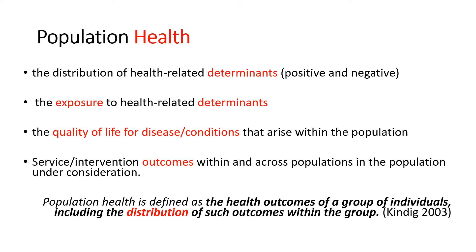We all remember the WHO definition of health, which is a state of complete physical, mental and social wellbeing, and is not merely the absence of disease or infirmity. Population health is used interchangeably with the term 'health of the population' and considers various components of health, including the distribution of health-related determinants both positive and negative, disease and conditions that arise within the population, service outcomes and the equity of those outcomes within and between populations, and quality of life of the population or subgroup under consideration. Population health is therefore defined as the health outcomes of a group of individuals, including the distribution of those outcomes within the group.